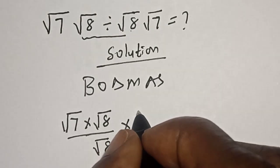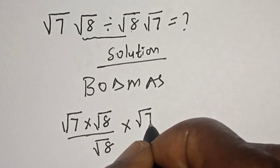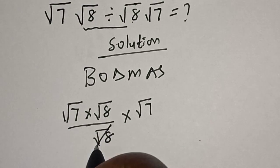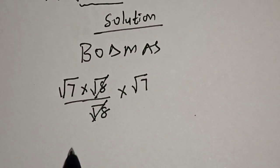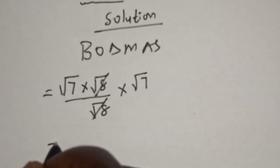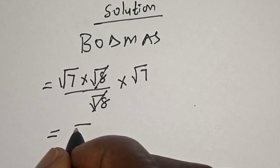This will cancel out, and this is equal to square root of seven multiplied by square root of seven.